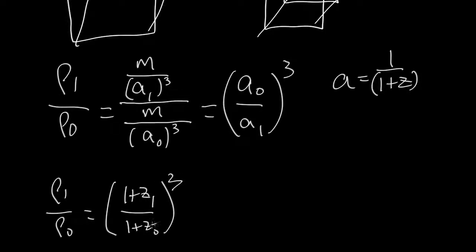Now, right now, the redshift is 0, so the density of the universe is going to go as the cube of the redshift, where I've made redshift just equal to the redshift back at time 1. So the density of the universe goes as the cube of the redshift.